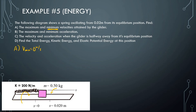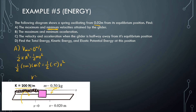Now let's find the maximum velocity. All of the elastic potential energy at the amplitude equals all of the kinetic energy at the equilibrium: one-half times k (200) times the amplitude (0.02) squared, equals one-half times the mass (0.5) times v squared. Solving for v, we get a maximum velocity of 0.4 meters per second.